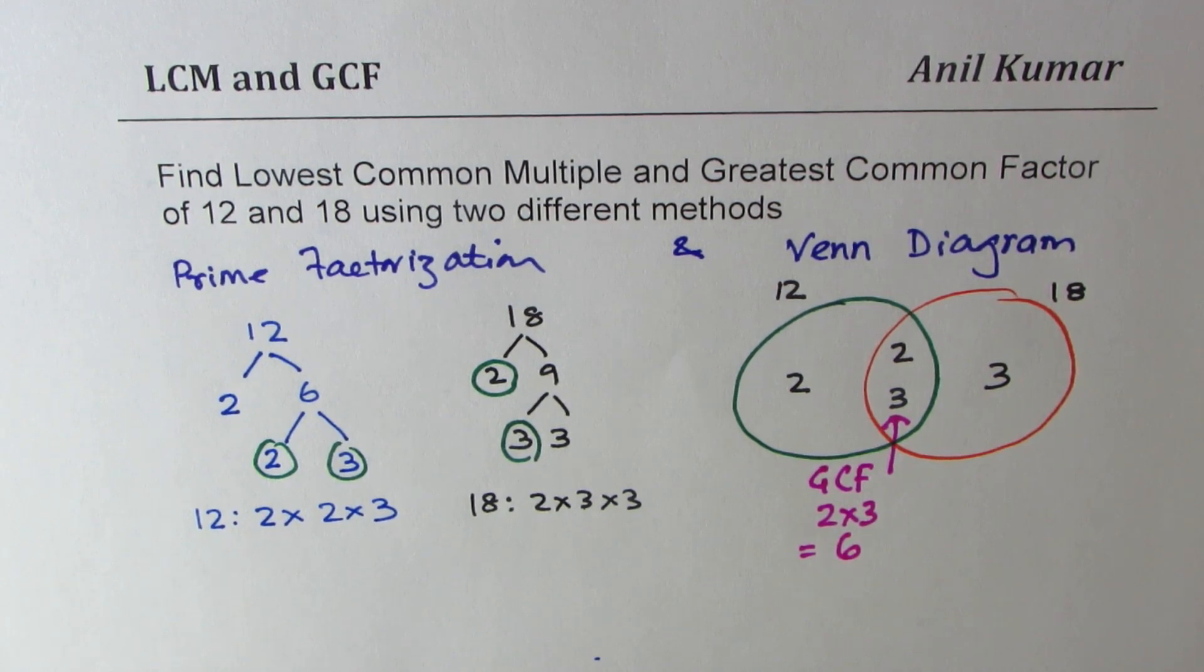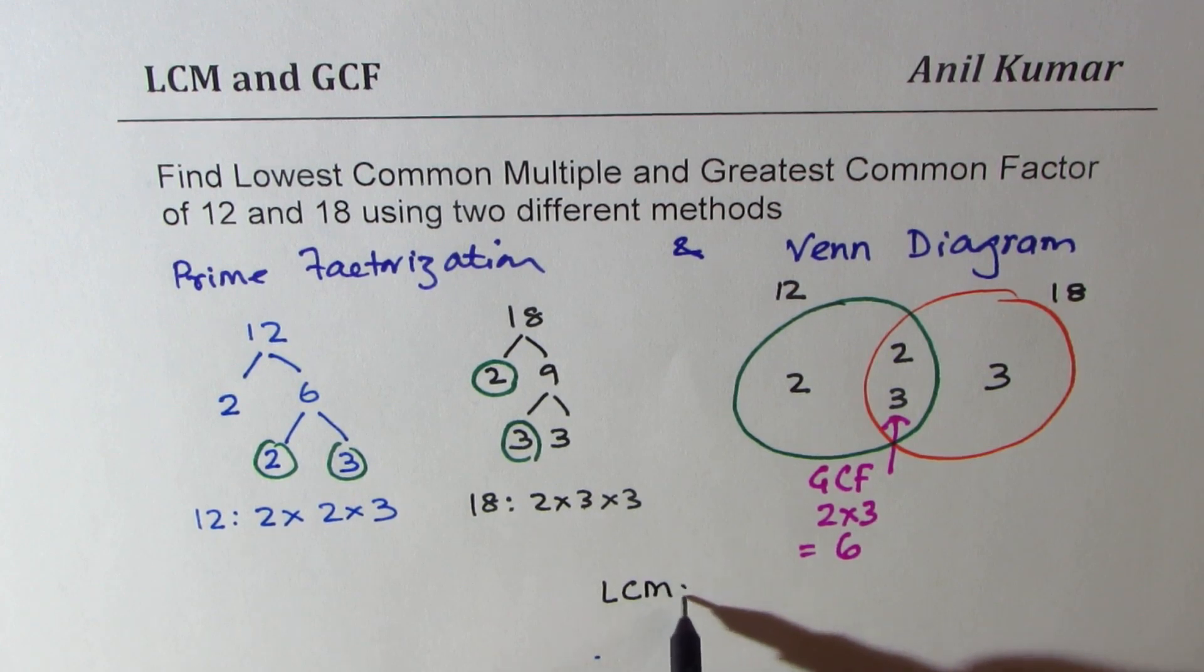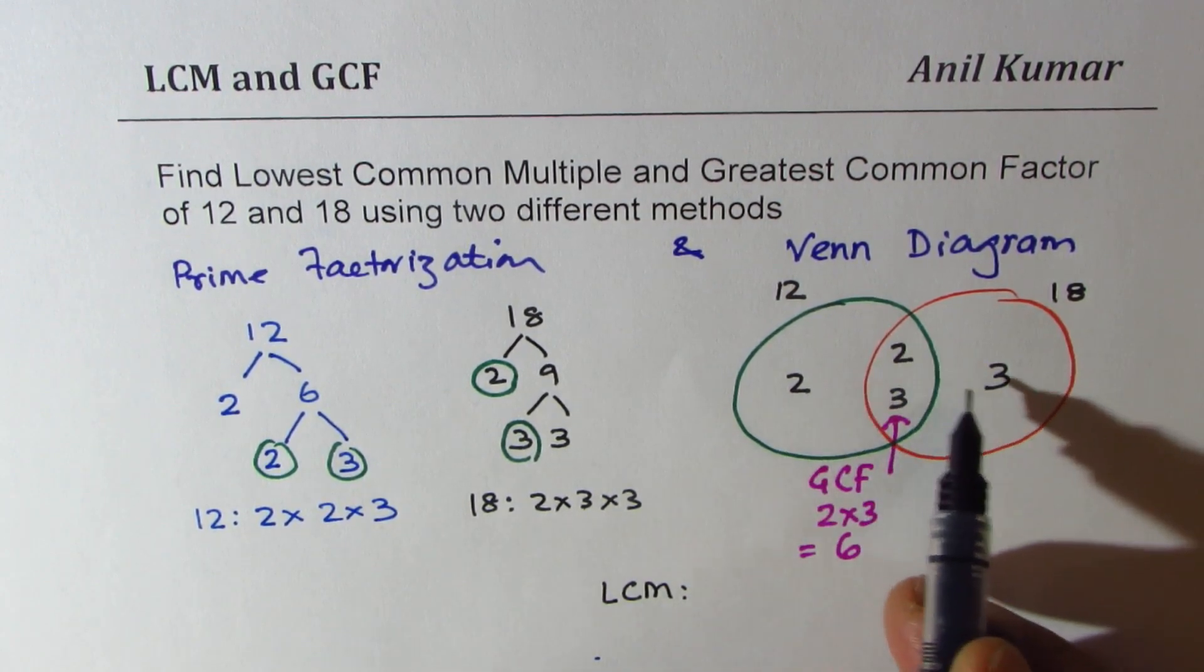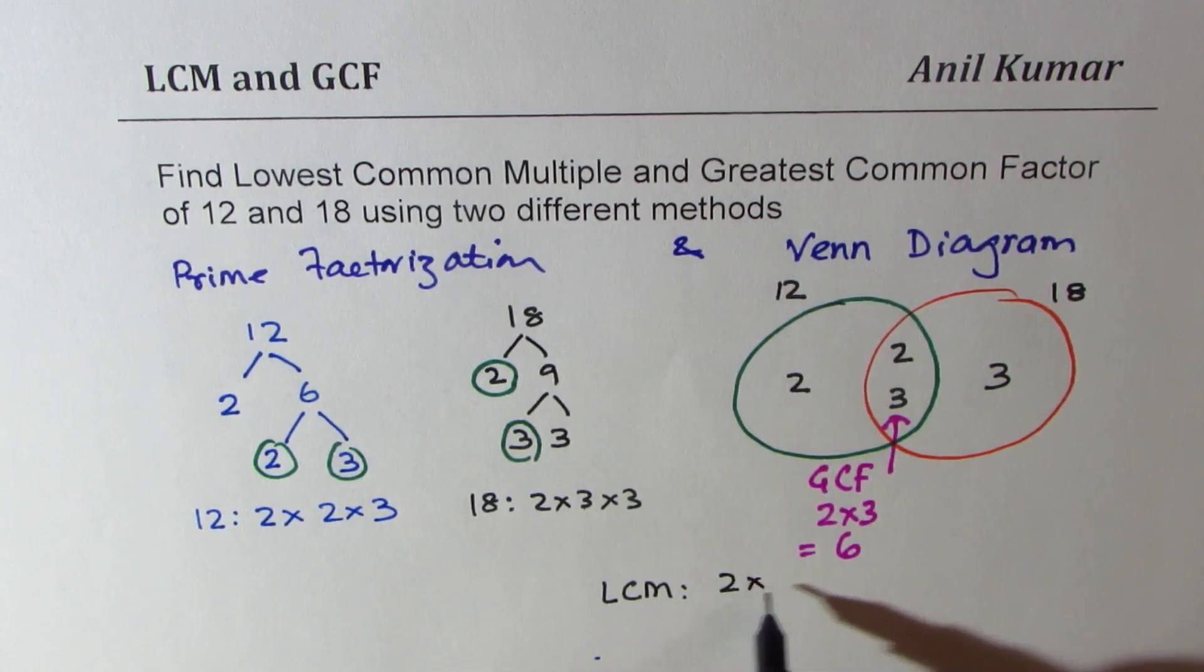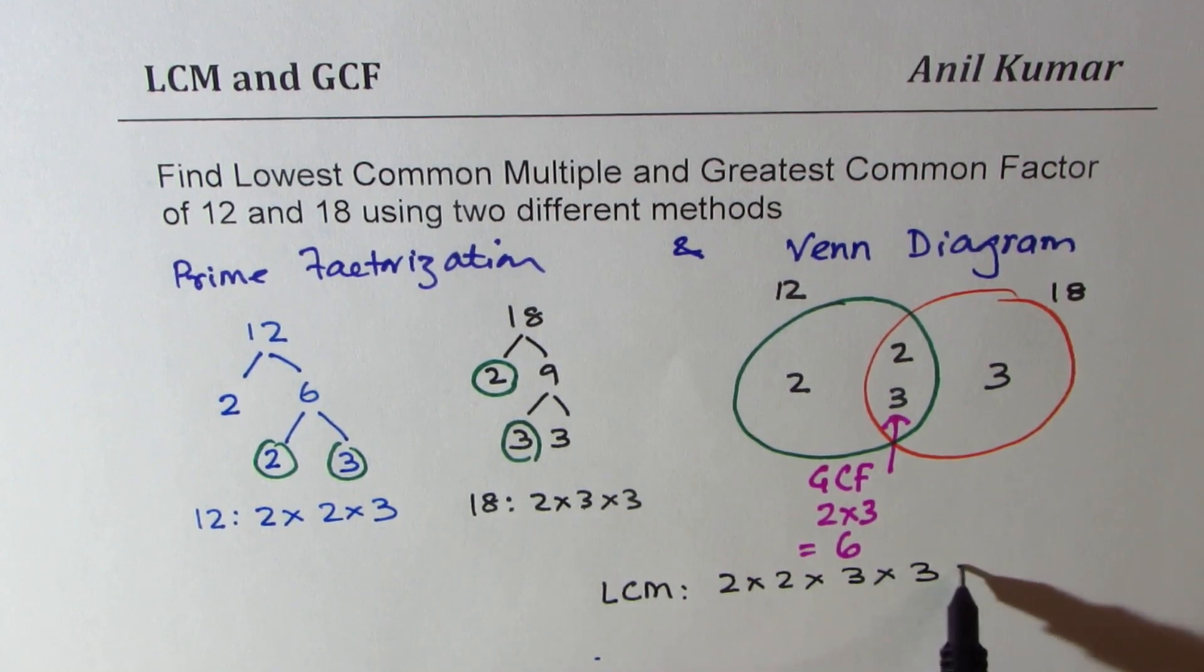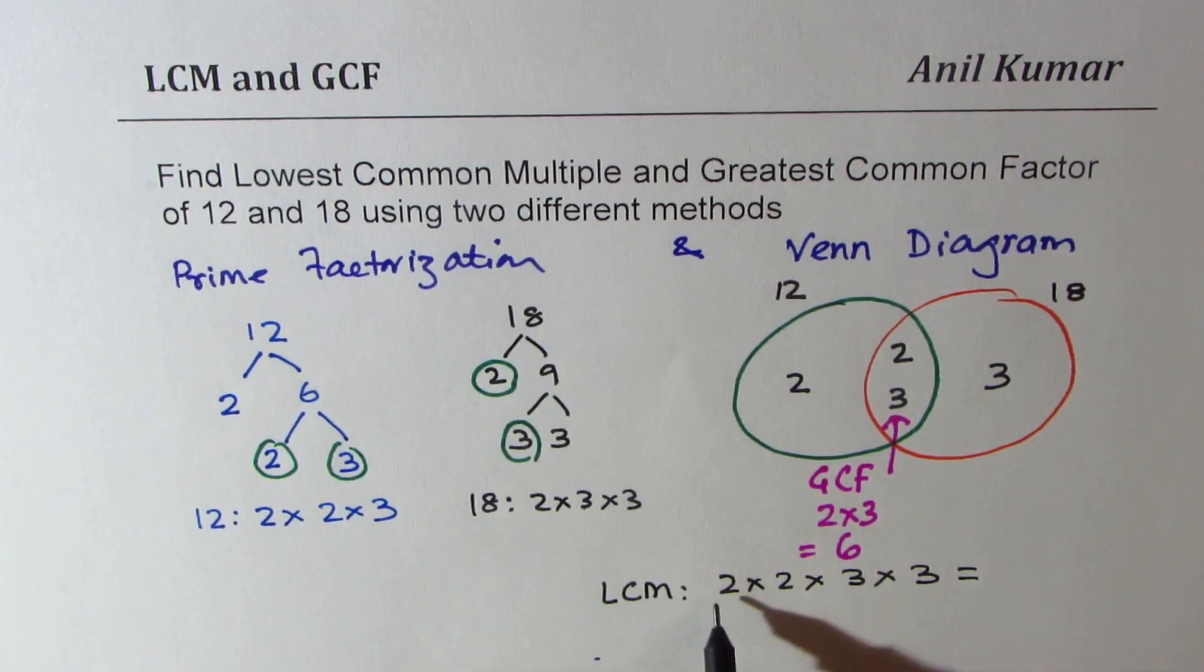For finding the lowest common multiple, LCM, what we need to do is just multiply all these numbers. So we get 2 times 2 times 3 times 3. 2 times 2 is 4, and 4 times 9 is 36. So we get LCM of 36.